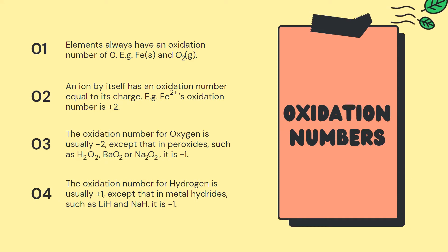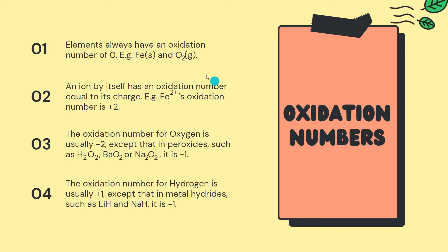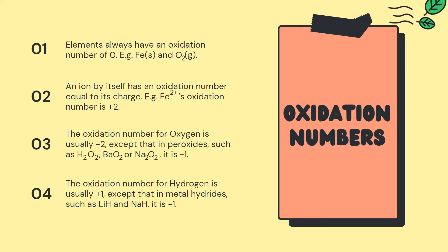There are four special cases to consider when calculating the oxidation number of an atom. First, elements always have an oxidation number of zero — for example, iron metal and oxygen gas, there is no charge. Second, an ion by itself has an oxidation number equal to its own charge — for example, the iron 2+ ion has an oxidation number of plus 2.